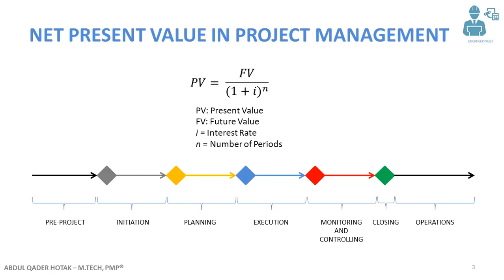As you can see here, the formula for present value is given as future value divided by 1 plus interest rate to the power of N. PV is the present value, FV is the future value, I is the interest rate, and N is the number of periods. If you have selected the period as years, then N will be the total number of years; if it's months, N will be the total number of months.